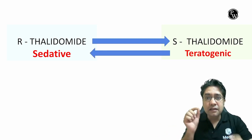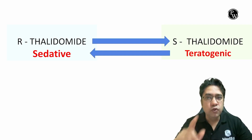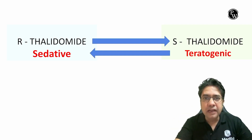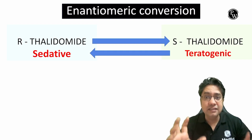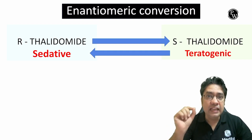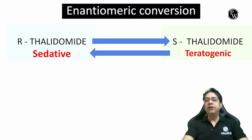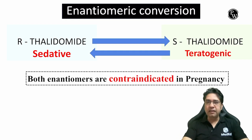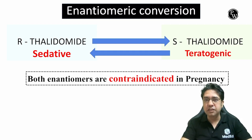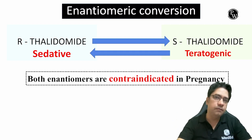This property of Thalidomide is known as the Thalidomide disaster. This property is also known as enantiomeric conversion. Because of this property of enantiomeric conversion, remember: both R and S enantiomers of Thalidomide are absolutely contraindicated in pregnancy.